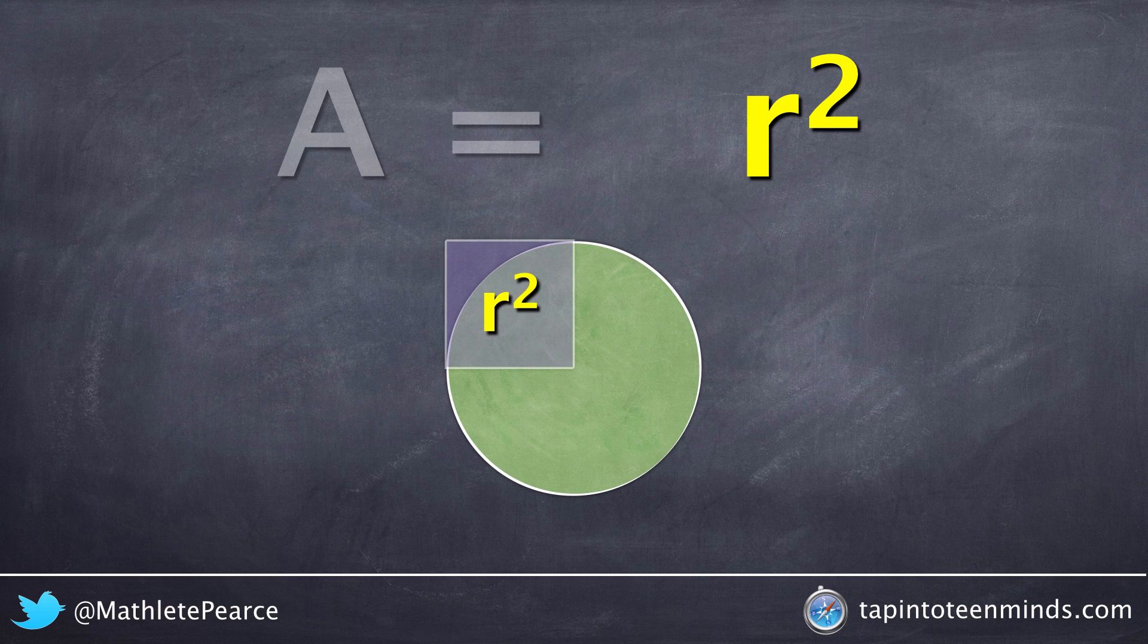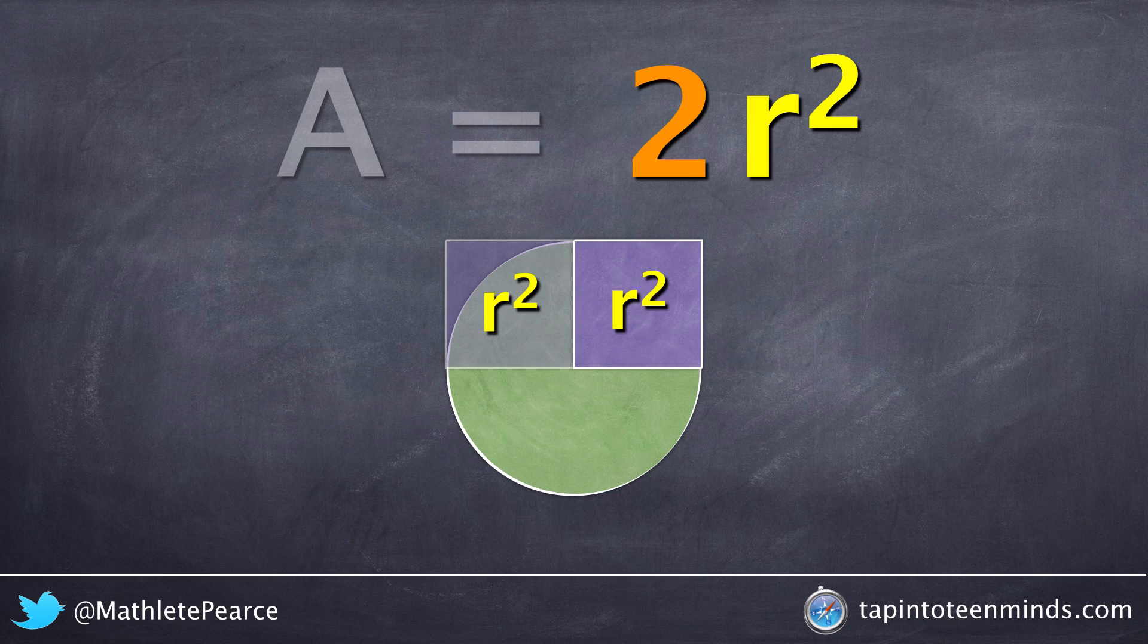So let's add another r squared, which gives us a total of two times r squared. We can see that that covers about a little more than half the circle, so that's not going to do.